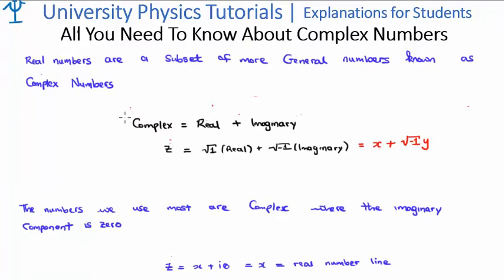Complex numbers have two components: a real component — something coming from the real number line — and something we are calling imaginary numbers, which hints at the concept of an imaginary number line. Although we are using this almost strange terminology 'imaginary,' imaginary numbers are no less real in the mathematical sense. What we are calling imaginary numbers actually exist, and they are not just a mathematical construct in order for us to do mathematical manipulations.